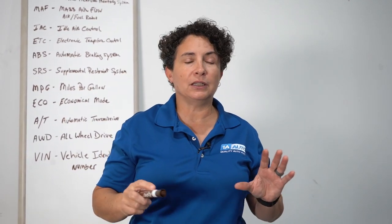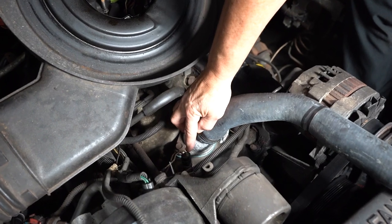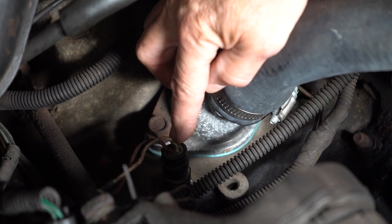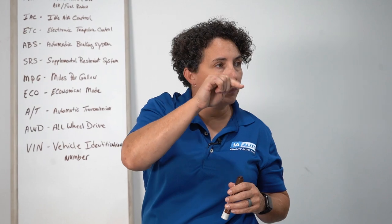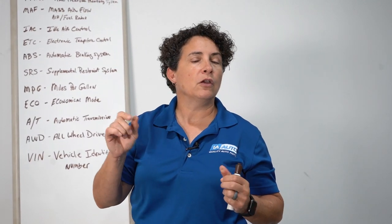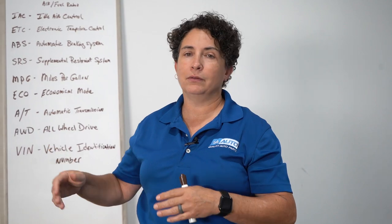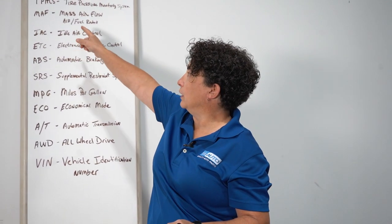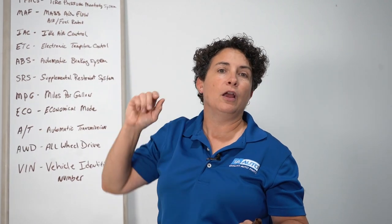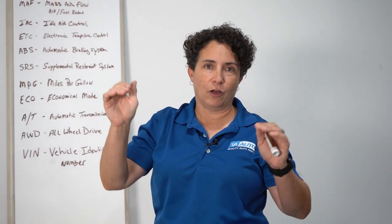ETC stands for electronic temperature control. That's more of an older-era term. ETC was a sensor — sometimes a single wire when it first started, then it became two, three, up to four wires on some high-end cars. It tells the computer what the temperature of the engine is so it knows where your idle should be — where a choke used to handle that before. It communicates with everything: the air-fuel ratio, IAC, and mass airflow sensor. All works together.